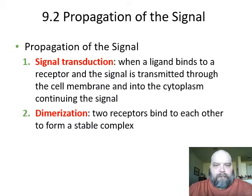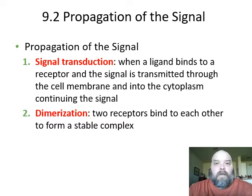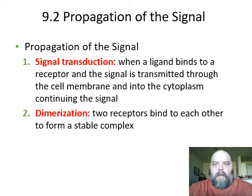Second, when it comes to propagation of the signal — especially with the receptor tyrosine kinases — the two parts will dimerize. Two individual parts will come together to form a dimer. A dimer is two parts coming together to form one. Dimers, trimers — two, three parts — depending on however many there are, depending upon the receptor.